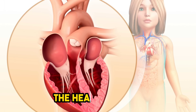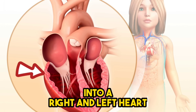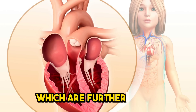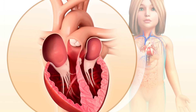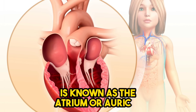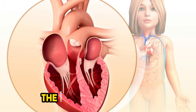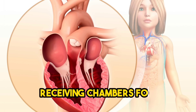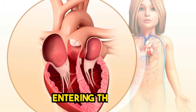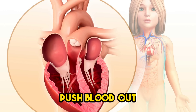The heart cavity is divided down the center into a right and left heart, which are further divided into two chambers. The top chamber is known as the atrium or auricle and the lower chamber is known as the ventricle. The two atria serve as receiving chambers for blood entering the heart, while the more muscular ventricles push blood out.